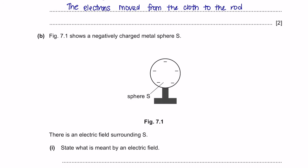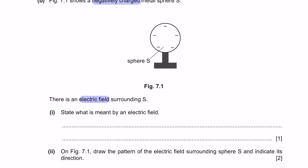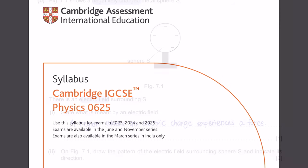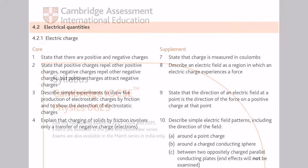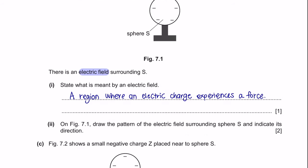Question B: Figure 7.1 shows a negatively charged metal sphere S. There is an electric field surrounding S. State what is meant by an electric field. An electric field is a region where an electric charge experiences a force. If you don't know where to get definitions, refer to your course specification — it states that an electric field is a region in which an electric charge experiences a force.